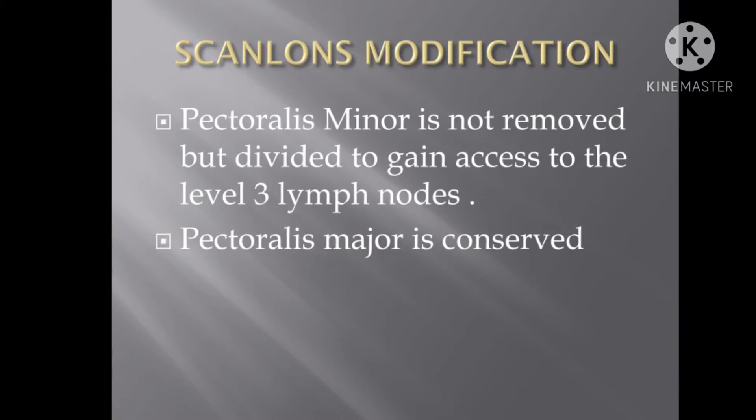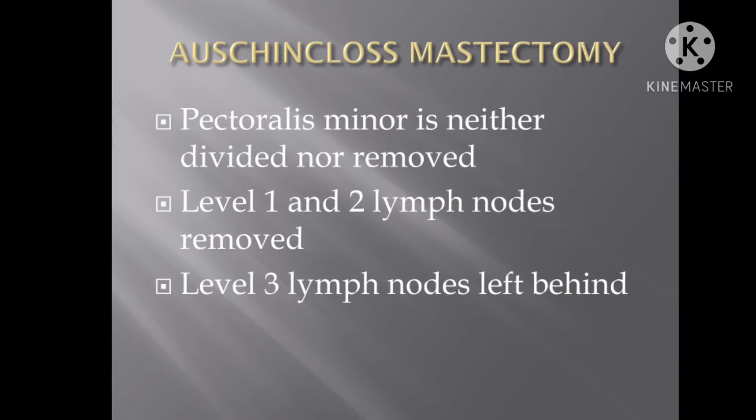Then came another modification done by Scanlon. In this modification, the pectoralis minor was not removed but was simply divided, and on division of the pectoralis minor, level 3 lymph nodes could be easily retrieved. Then came the Auchincloss modification, where only level 1 and level 2 lymph nodes were removed without dividing or removing the pectoralis minor muscle.